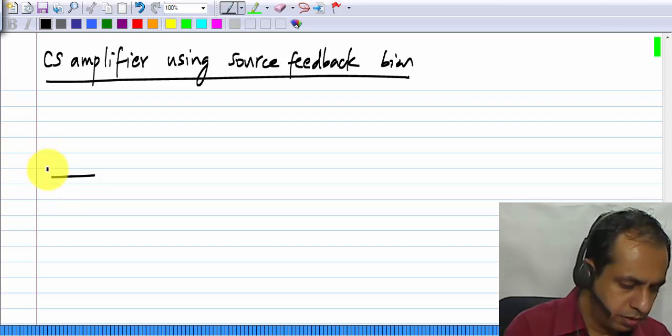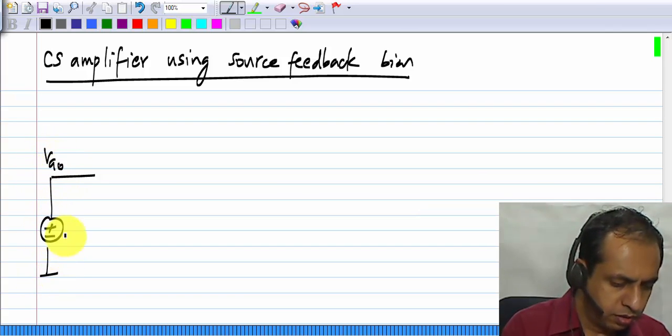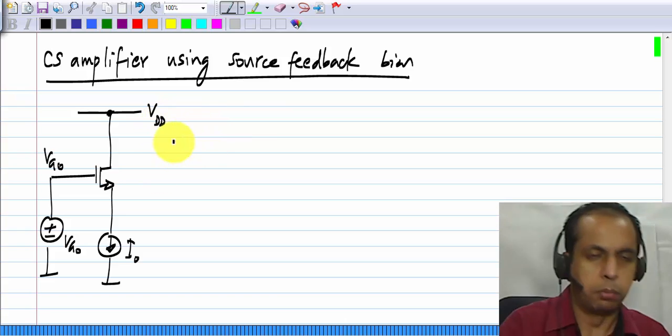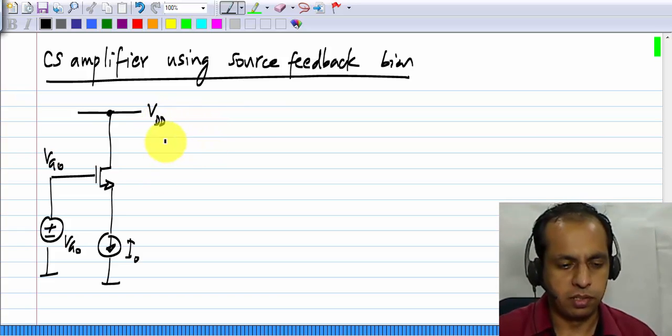Our bias picture looks like this. The gate is biased at a constant voltage VG0, and a current source I naught is connected to the source, and the drain is connected to VDD, because in the biasing picture, the drain plays no role.